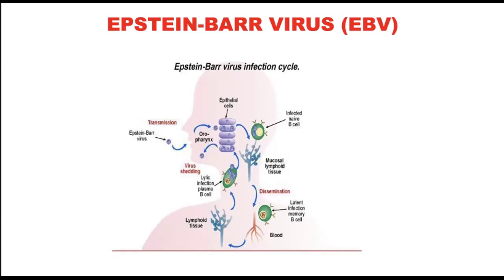It can also spread through direct contact like sexual contact — through semen or blood. We can spread EBV so long as the virus is active, which could be weeks or months. Once inactive and it has undergone latency, we can no longer spread it unless it gets reactivated.